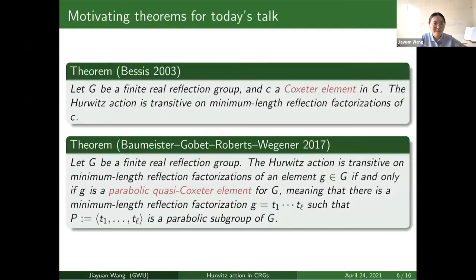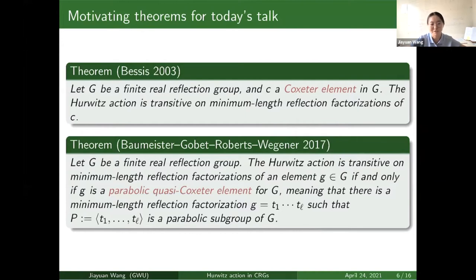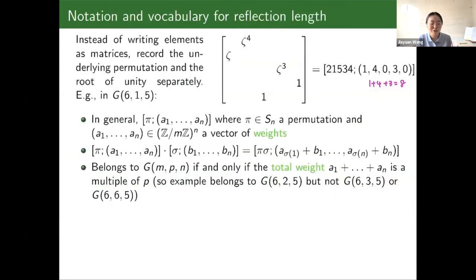Here are the motivating theorems for today's talk. The first is by Bessis from 2003, which says that for a finite real reflection group the Hurwitz action is transitive on a special kind of element called the Coxeter element. Then Baumeister, Gobert, Roberts, and Wagner showed that the Hurwitz action is transitive on a bigger collection of elements called the parabolic quasi-Coxeter elements. This inspired us to search for a description of Hurwitz transitive elements in the complex setting. In order to do that we need to talk about reflection length — for any element there is a formula for that.